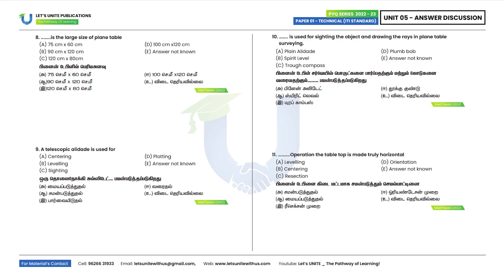Eighth question: What is the large size of a plain table? The large size of the plain table is 75 × 60 cm, i.e., 750 mm × 600 mm. Option A is the correct answer.